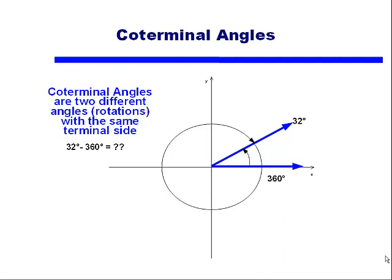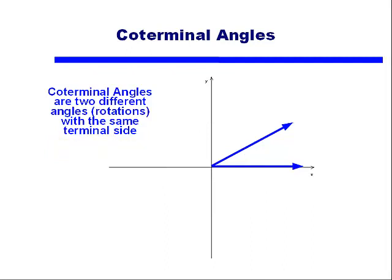What happens if we subtract 360 degrees? Instead of continuing 360 degrees counterclockwise, what if we go clockwise from 32 degrees? That would be a negative rotation of 360 degrees — the same as taking 32 degrees and subtracting 360 degrees, giving us an angle of negative 328 degrees. Without seeing the rotation arcs, you can't tell which of those five angles caused this terminal side. And of course we're not limited to those rotations — we could continue to add or subtract 360 degrees to our heart's content.